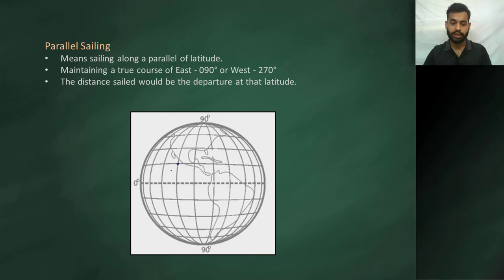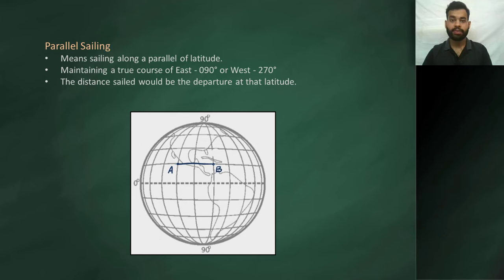Suppose this is our initial position A and we are travelling eastwards, and this is our final position B. You can see that we have travelled from our initial position A to our final position B without changing latitudes, or along the same latitude. So this is what parallel sailing is.